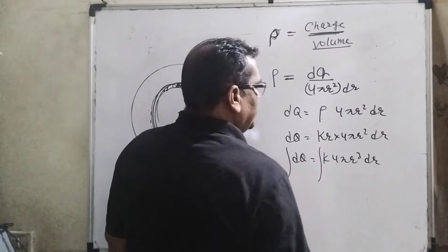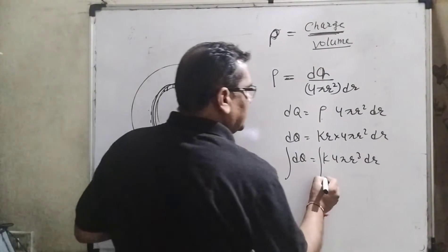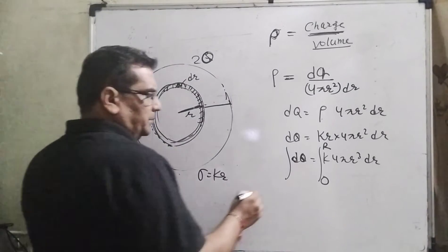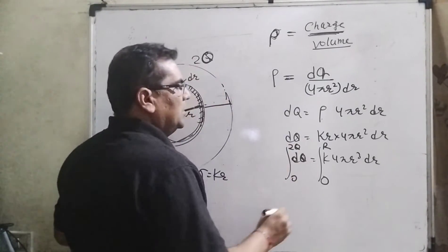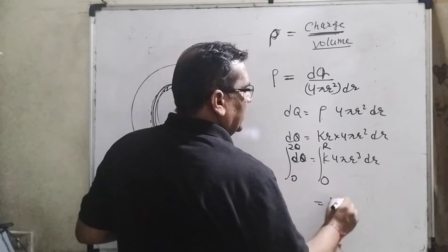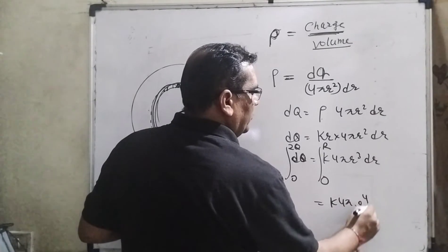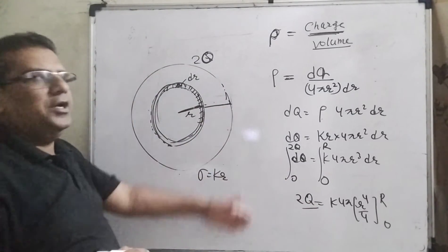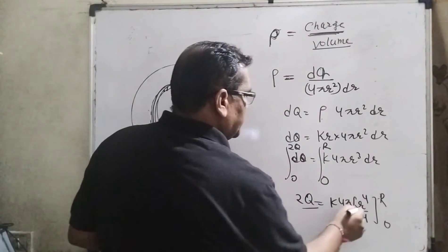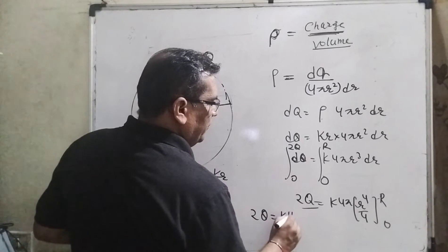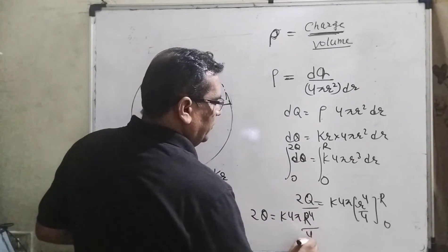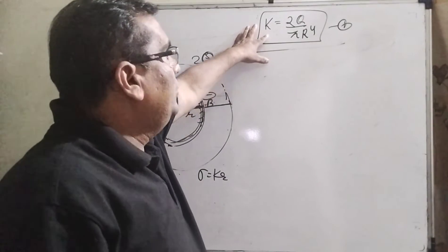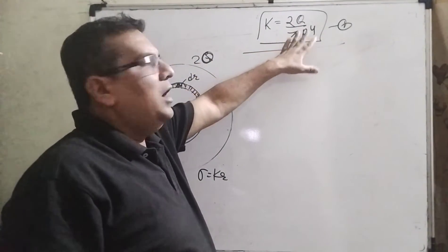Now integrate both sides. The limit is 0 to R, and the total charge integrating dQ gives 2q. So: 2q = k · 4π · r⁴/4 evaluated from 0 to R. The 4s cancel, giving 2q = k·π·R⁴. Therefore k equals 2q divided by π·R⁴.